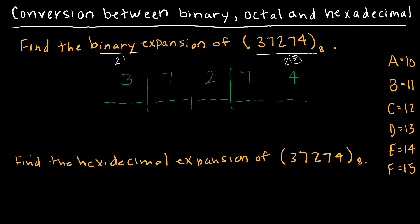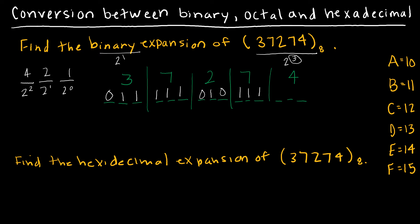For an octal value, we have 2 to the 0 (1), 2 to the 1st (2), and 2 squared (4). So I'm asking how many 4s, 2s, and 1s it takes to make each octal digit. For 3: 0 fours, 1 two, and 1 one, since 2 plus 1 is 3. For 7: a 4, a 2, and a 1. For 2: just 1 two, the others are 0s. For 4: just 1 four, the others are 0s.